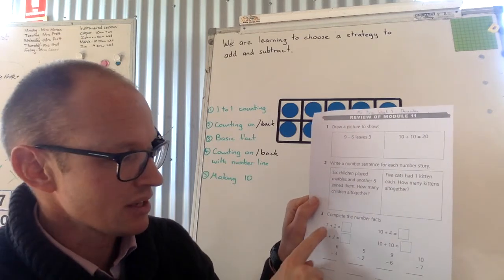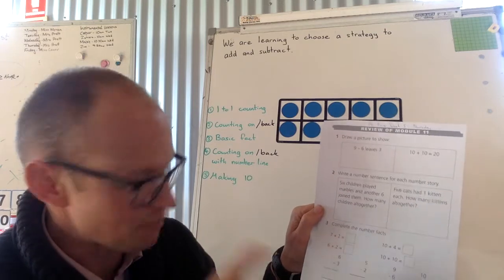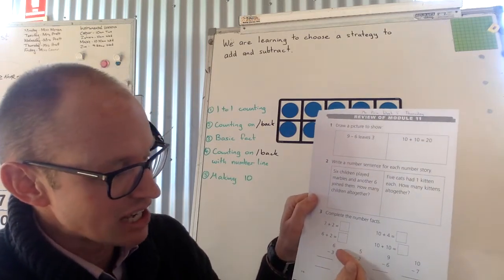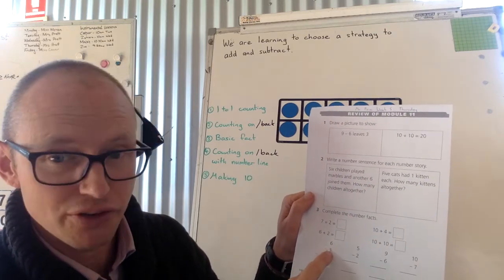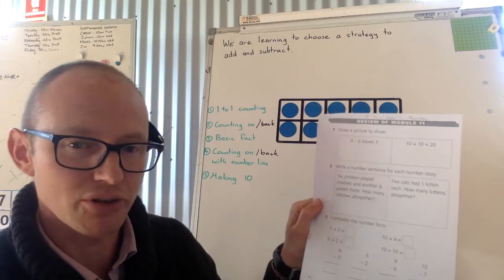Complete the number facts. Seven plus two equals. Yes, right. Five is number. Six plus two equals. That's it. This one here is just changing how it looks. So six take away three, putting the answer down below. Five take away two, putting the answer below.